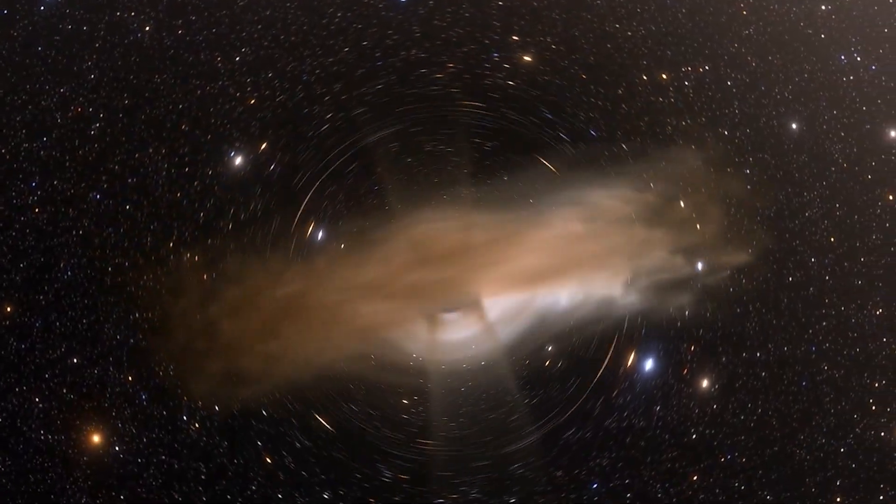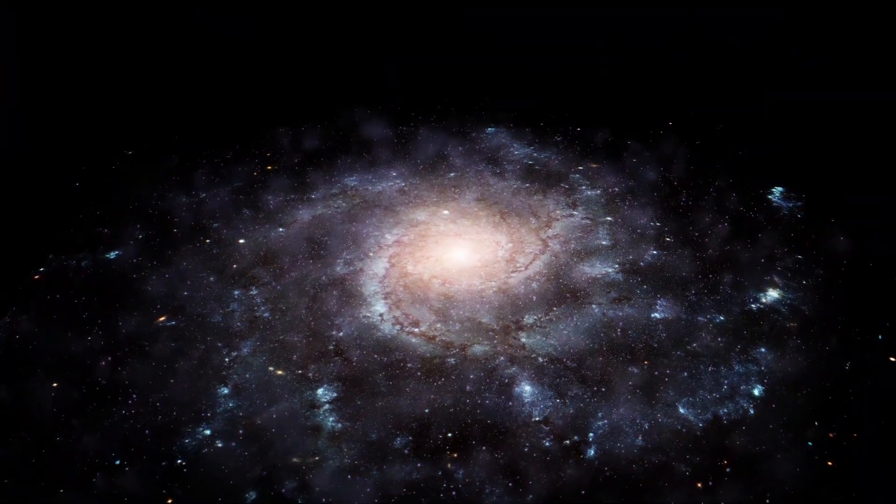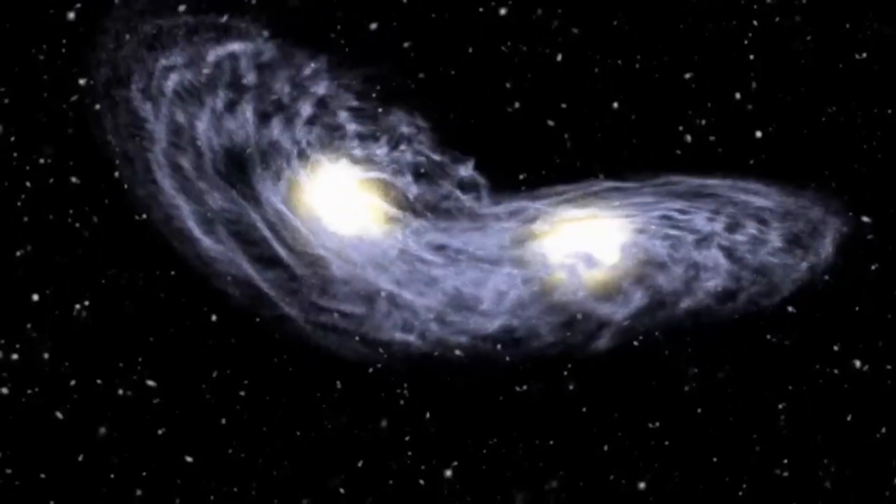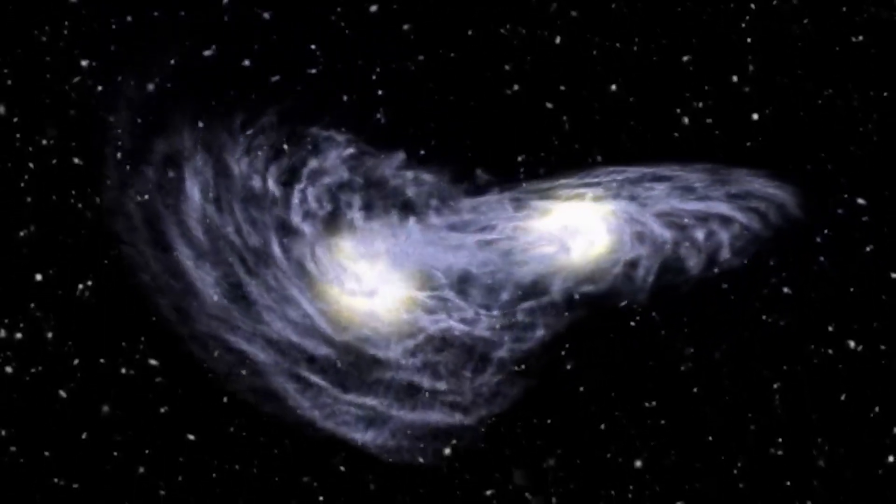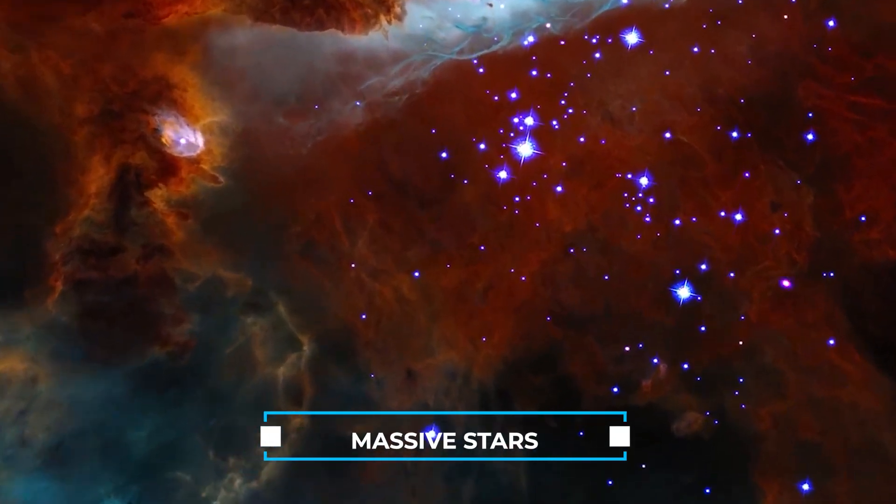Both galaxies have supermassive black holes at their centers, and these black holes will also merge during the collision, forming an even larger black hole in the new galaxy's heart. This merging process can spark bursts of star formation in places where gas clouds collide and compress, forming new nurseries for young, massive stars.